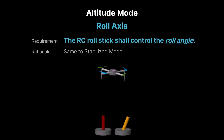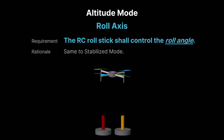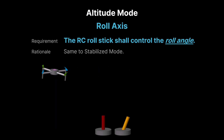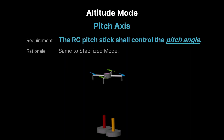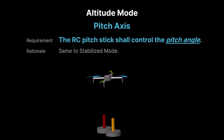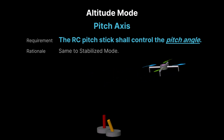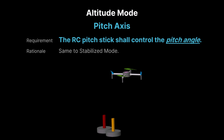Same as stabilized mode, in altitude mode the RC stick controls the quadcopter's roll angle, allowing the operator to tilt the drone sideways. The autopilot helps stabilize the roll, ensuring the quadcopter returns to level when the stick is released. The RC stick also controls the quadcopter's pitch angle, allowing the operator to tilt the drone forward or backward. The autopilot helps maintain stability, ensuring the drone levels out when the stick is released.